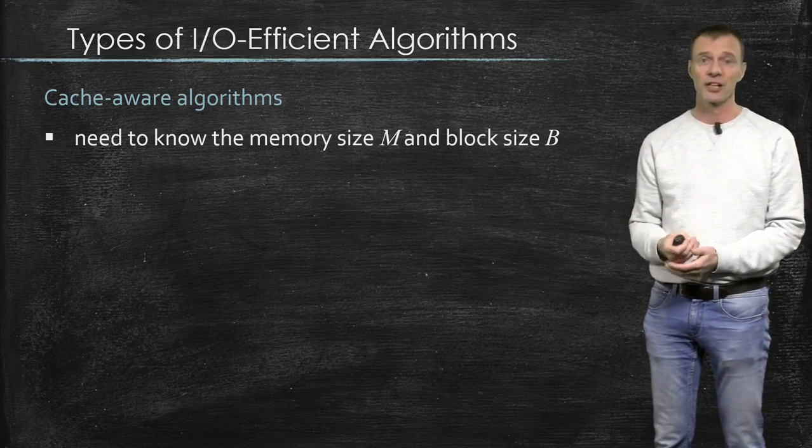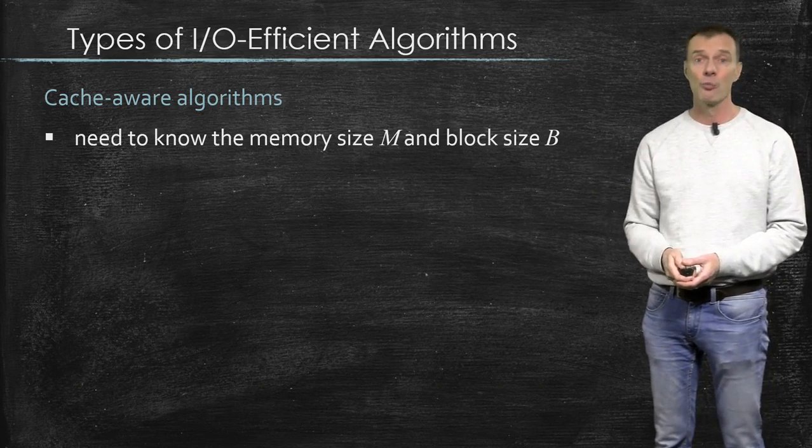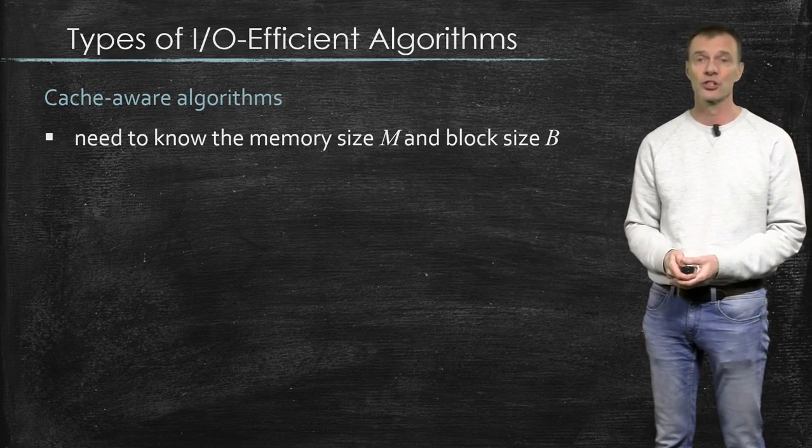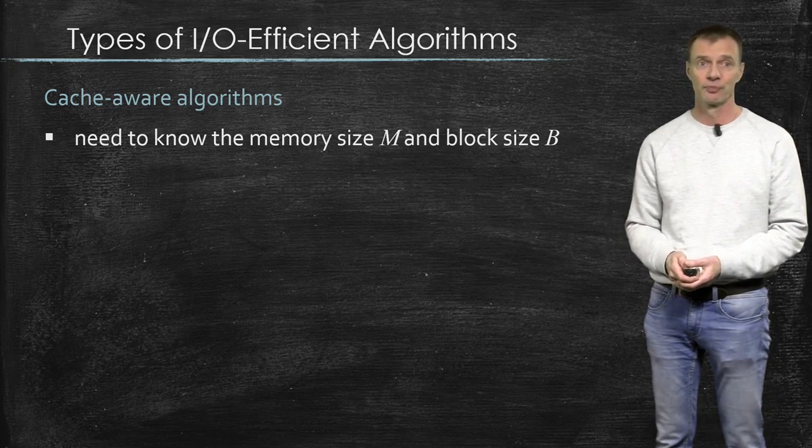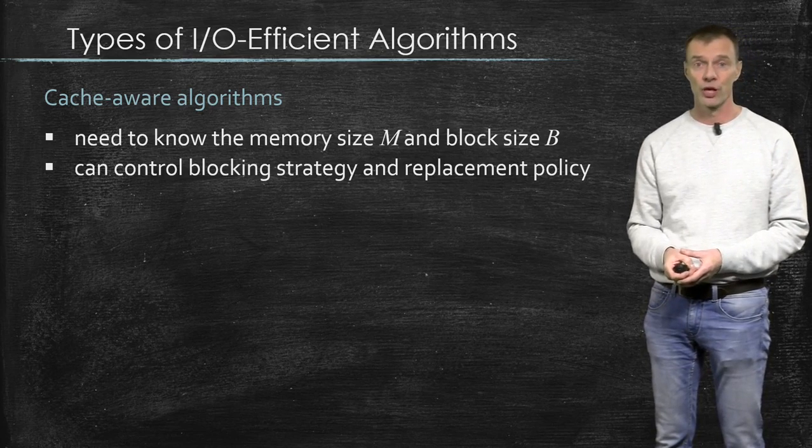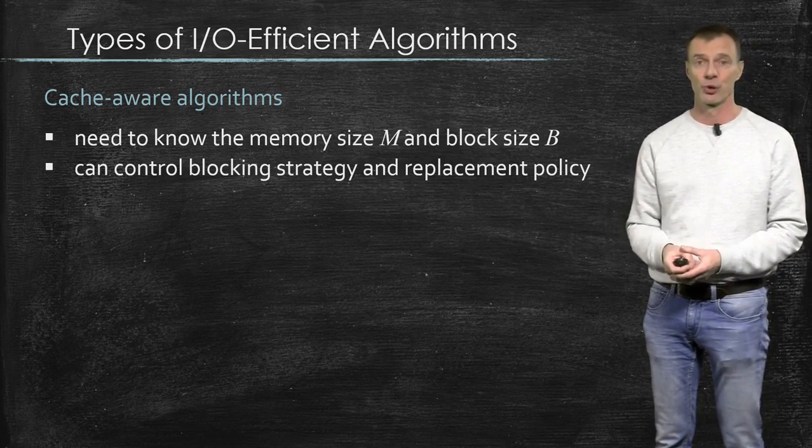And to be able to say that, you need to know how big a block is. So cache-aware algorithms have this knowledge and they use it. Also, as I just explained, they can actually control the blocking policy and the replacement policy.